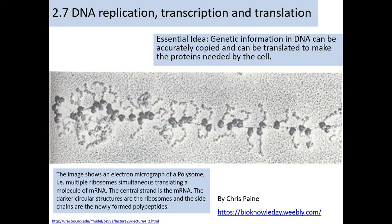This is a very nice electron micrograph picture of a polysome. So what is a polysome? Well, why do we call this a polysome? Because it has structures similar to ribosomes — it is ribosomes, but these are ribosomes that form a kind of chain linked together using mRNA.